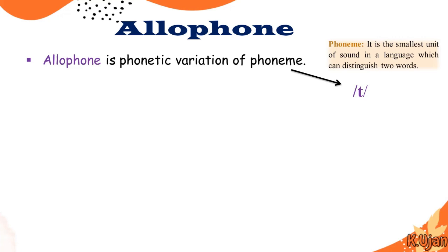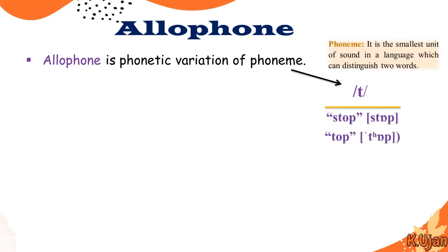The variation or phonetic variation of a phoneme is known as an allophone. For example, the phoneme /t/ has two ways to be pronounced — as in the word 'stop' and the word 'top'. The /t/ sound in 'stop' and the /t/ sound in 'top' are different.